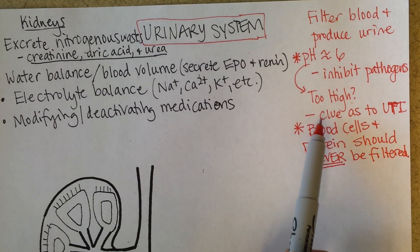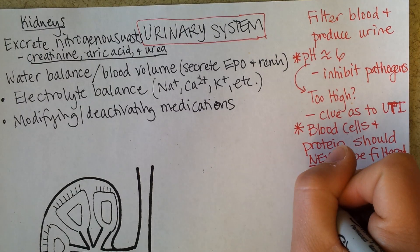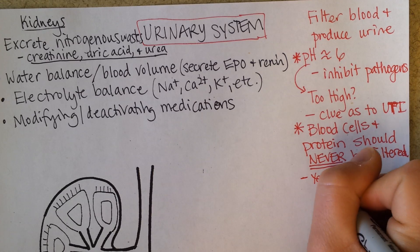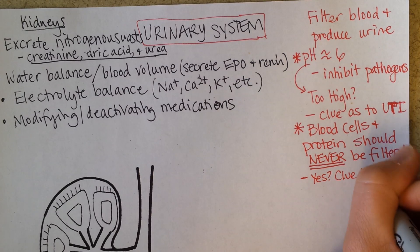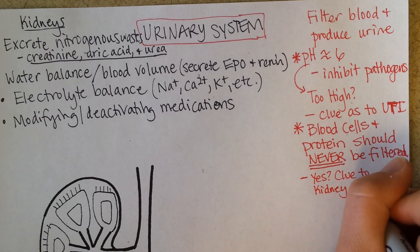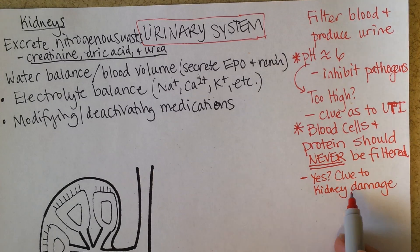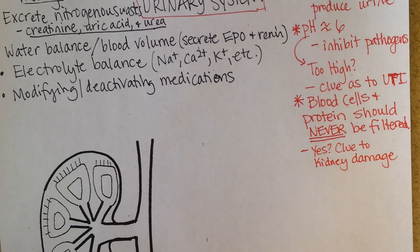So you get clues. If blood cells or proteins are found in the urine, this is a clue to kidney damage or infection. The filtering apparatus has been damaged and now stuff is getting through that shouldn't.